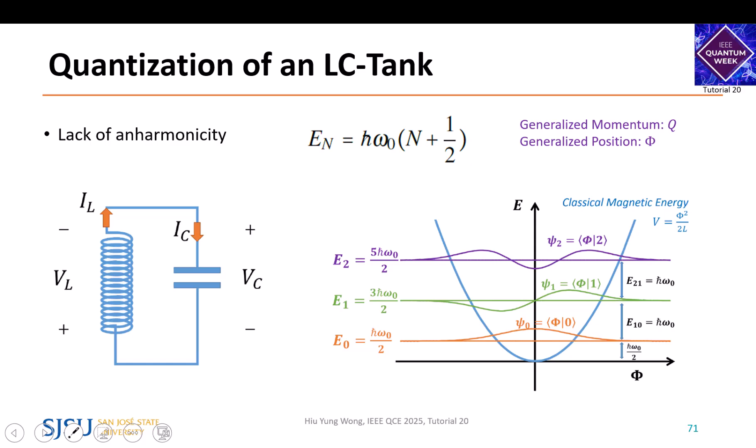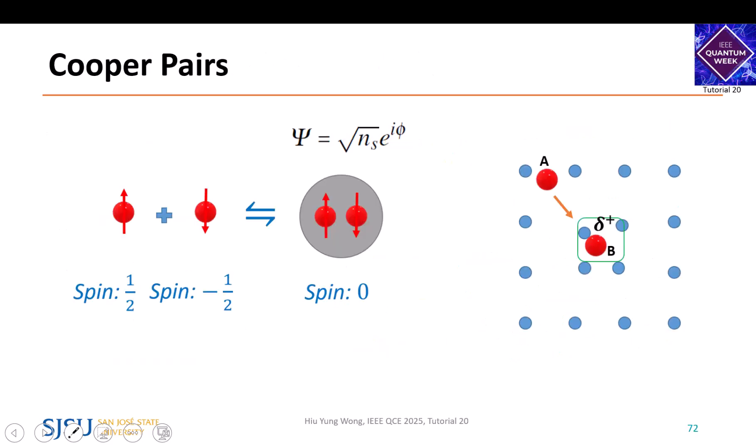That is the interesting thing about quantum mechanics—like in vacuum, because of this finite fluctuation energy you can generate something very interesting, for example electron hole pairs. So this is the quantization.